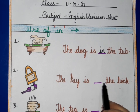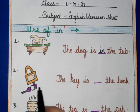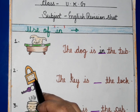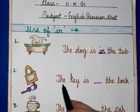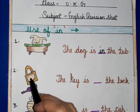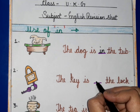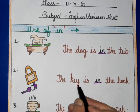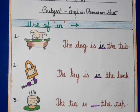The key is in the lock. Aap deekh saktay hain yahan par ek lock hai aur ki. The key is in the lock — ki hai lock ke andar. So we will write 'in' here. The key is in the lock.